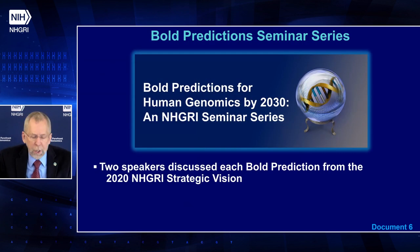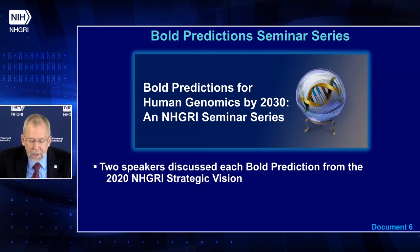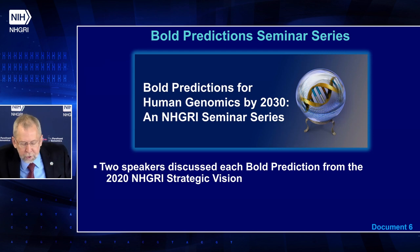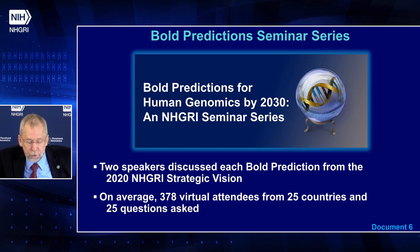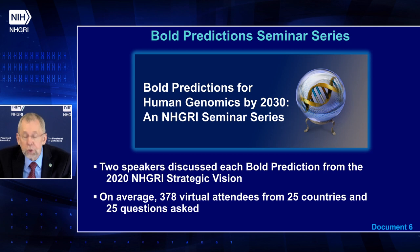In January of 2022, NHGRI concluded its successful Bold Predictions Seminar Series. For each of the ten bold predictions in the 2020 NHGRI Strategic Vision, we invited two speakers to describe the area in greater detail and indicate what they thought would be necessary to make the prediction come true. On average, each seminar had 378 virtual attendees from 25 countries, and 25 audience questions were asked. We encourage everyone to view the recordings on our Genome TV YouTube channel, which has averaged 2,000 views so far, with the number rising all the time.